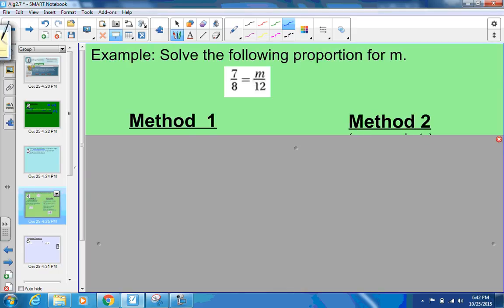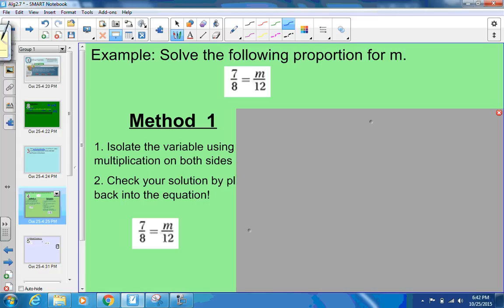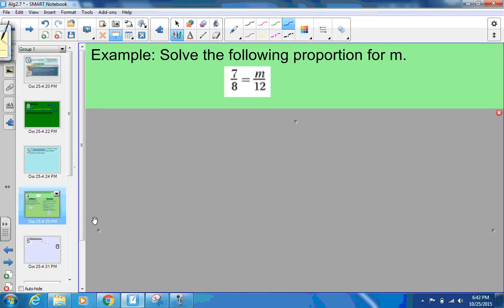Here's the example. It says solve the following proportion for m. We have 7/8 equals m/12. We'll leave it as 12. We're trying to solve for m.